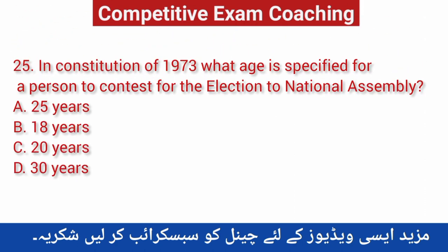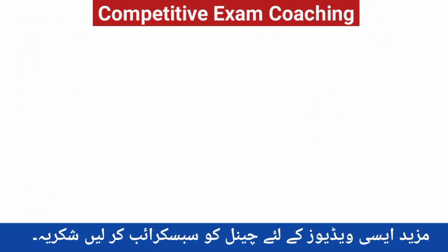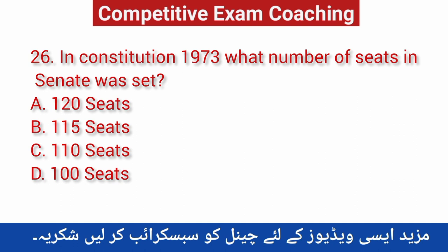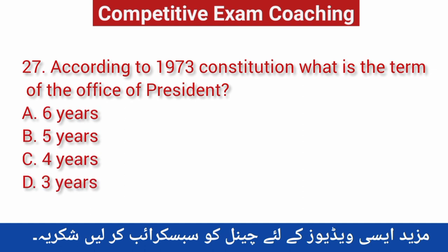Question number twenty-five: In the constitution of 1973, what age is specified for a person to contest for election to the National Assembly? Correct answer is A — 25 years. Question number twenty-six: In the constitution of 1973, what number of seats in the Senate was set? Correct answer is D — 100 seats. Question number twenty-seven: According to the 1973 constitution, what is the term of office of the president? Correct answer is B — 5 years.